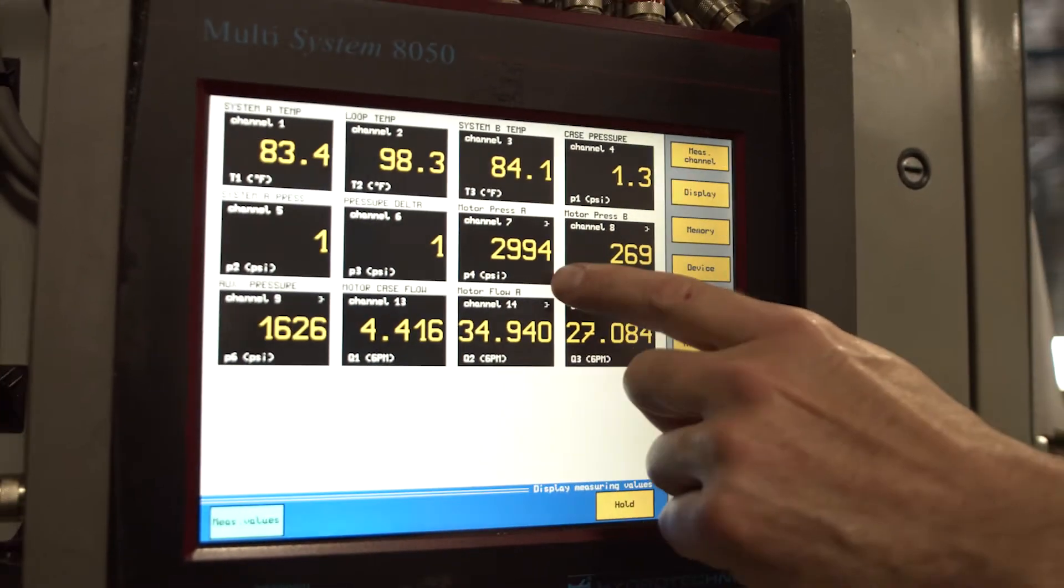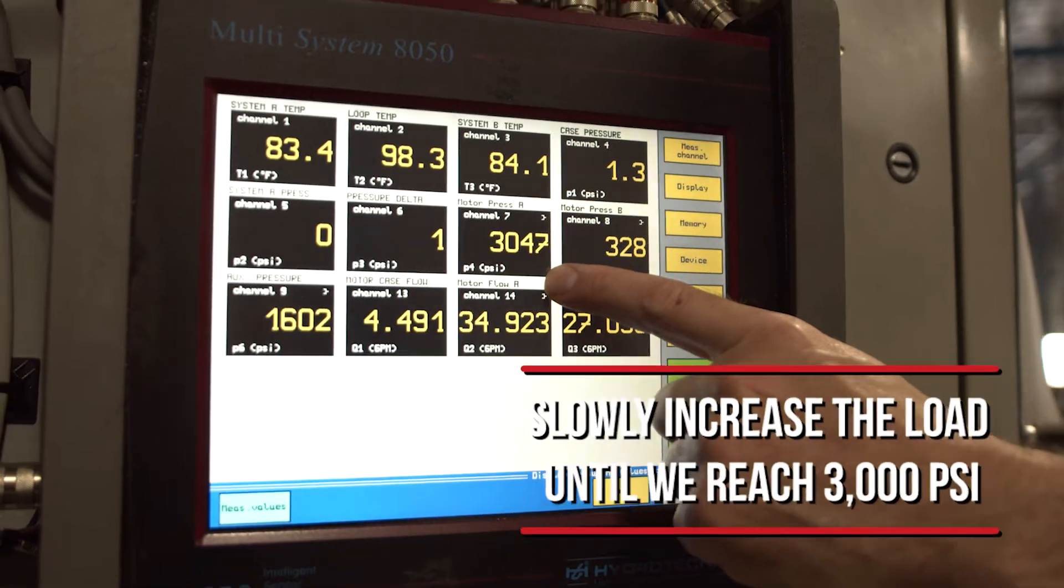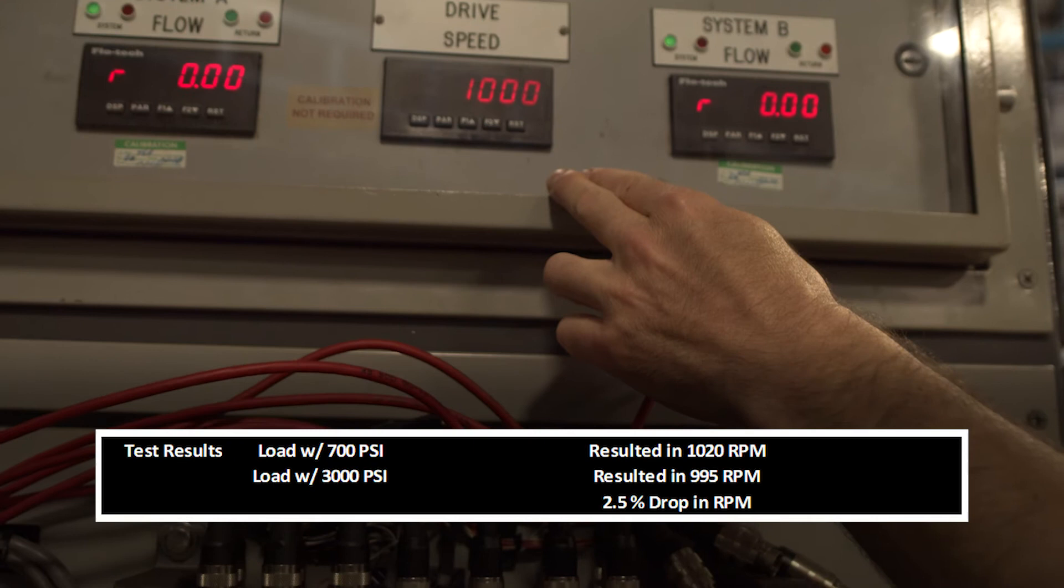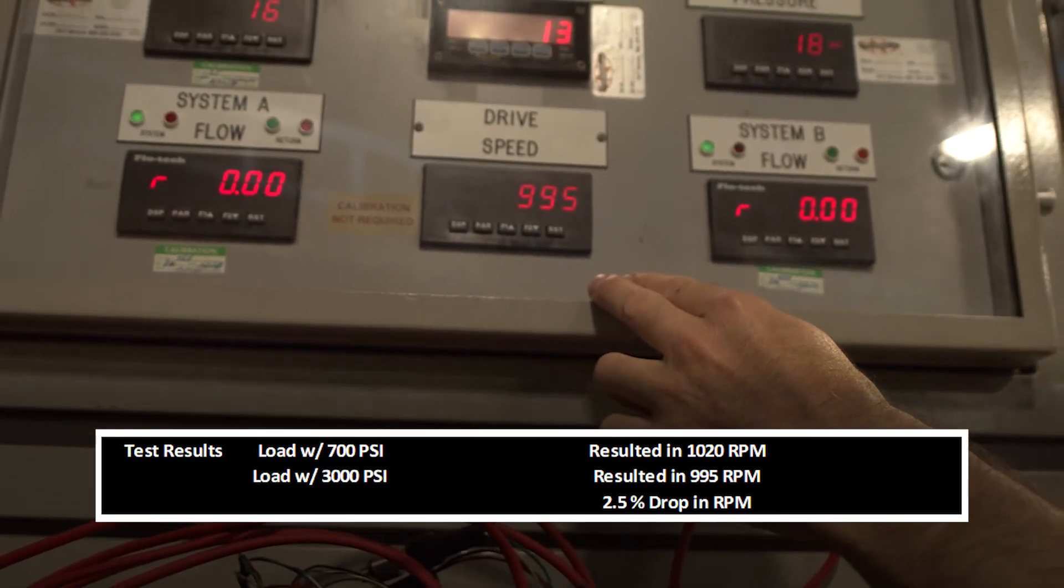We have maintained 35 gallons per minute. Our increased load on the motor has resulted in 3000 psi, and our RPM has slightly dropped off to 995 RPMs.